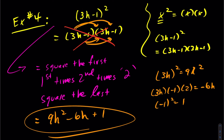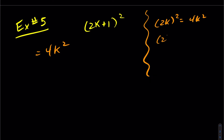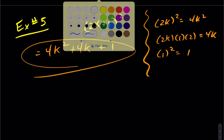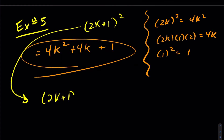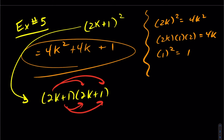Given any binomial squared: square the first, first times second times 2, and square the last. Let's try it with (2k+1) squared. Square the first: 2k squared gives 4k squared. First times second times 2: that's just 4k. Square the last: 1 squared is 1. So we get 4k squared plus 4k plus 1. You could verify this the long way by writing 2k plus 1 times 2k plus 1 and distributing, and you would indeed get 4k squared plus 4k plus 1.